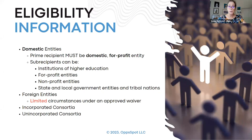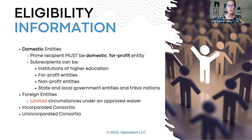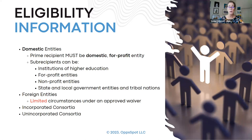Eligibility information: applicants must be for-profit, domestic U.S. companies. Sub-recipients or subcontractors can be institutions of higher education, research institutions, other for-profit entities, other non-profit entities, or local and state government entities such as tribal nations. If you need an exception to work with a foreign entity, those could be approved in limited cases, but you will have to submit a waiver application with your full application. You could also work with incorporated or unincorporated consortia.